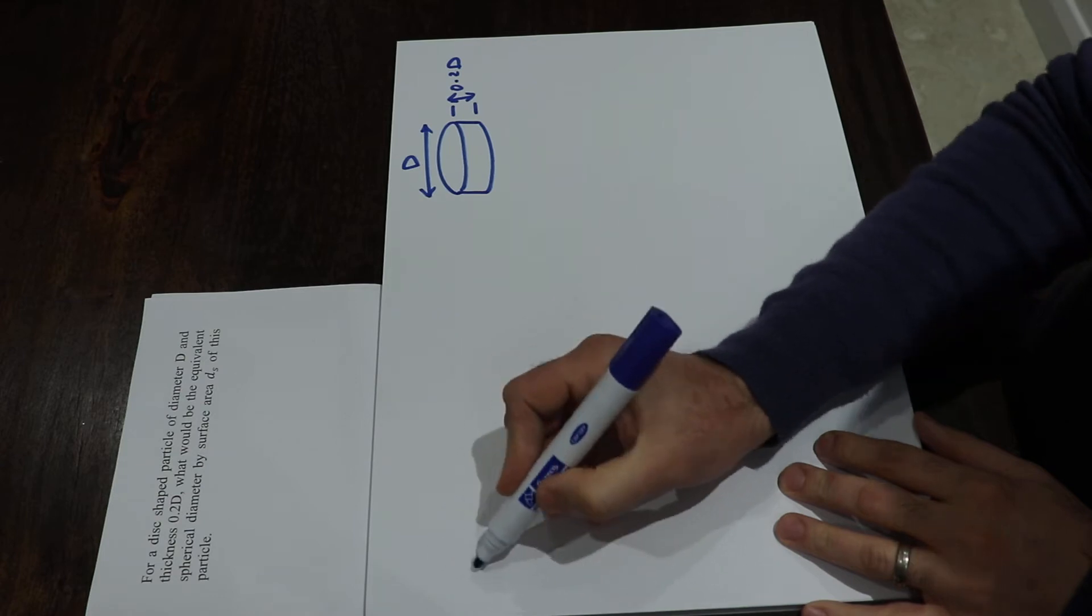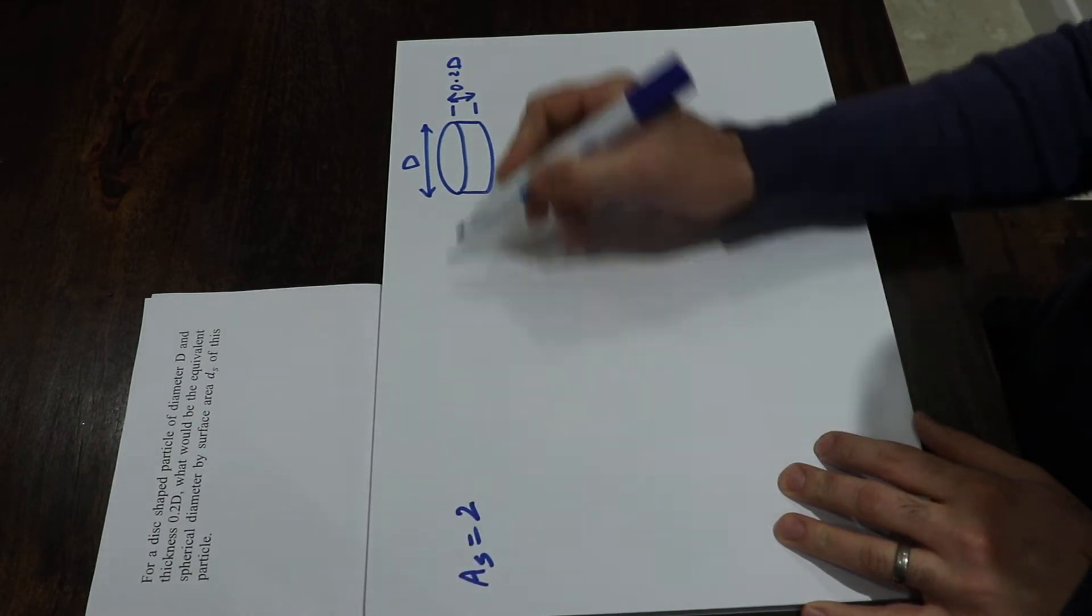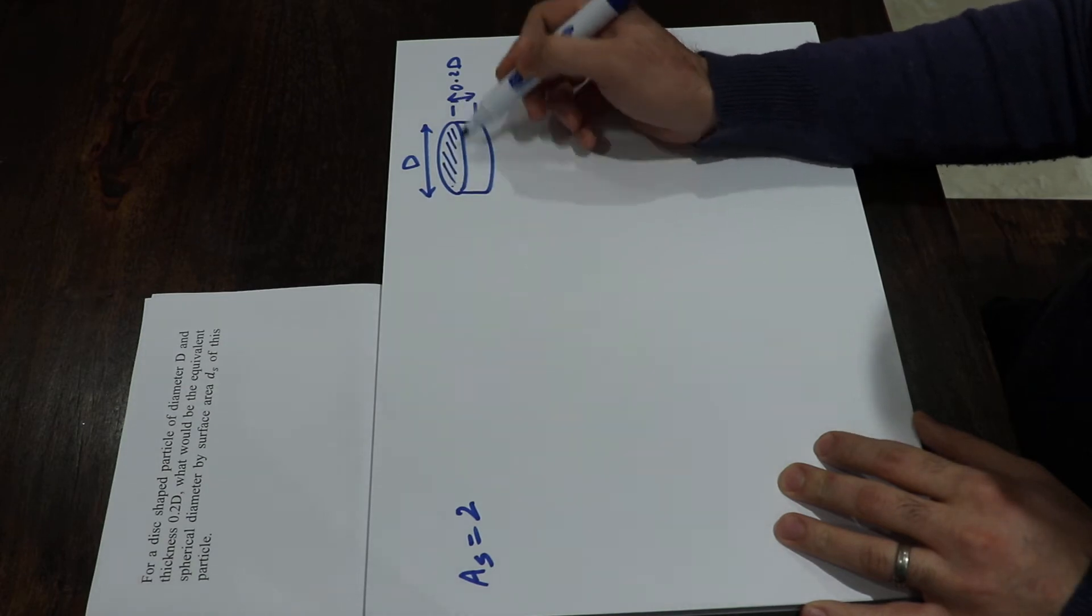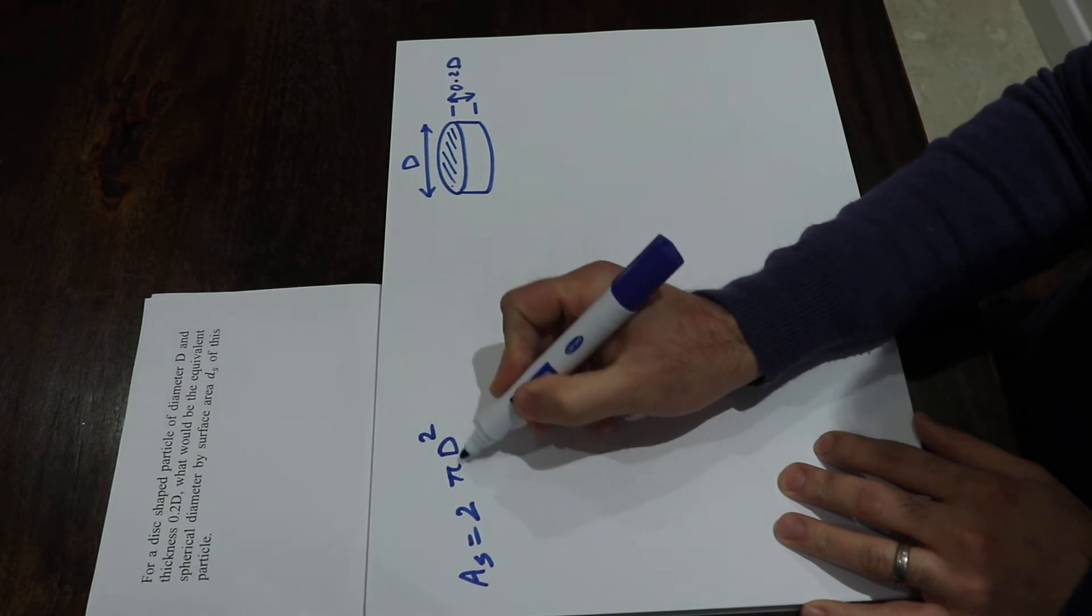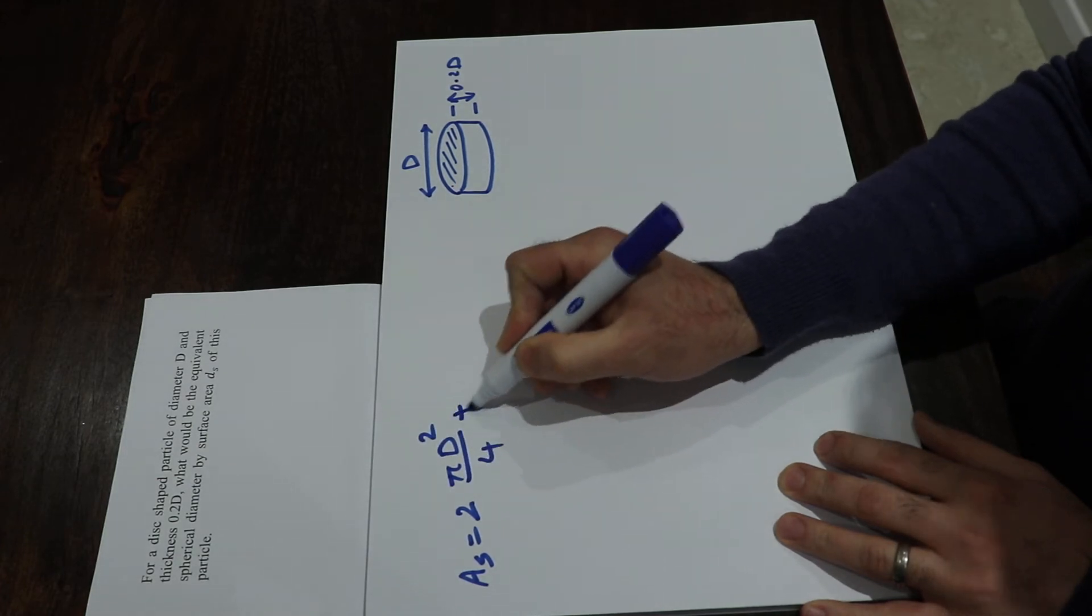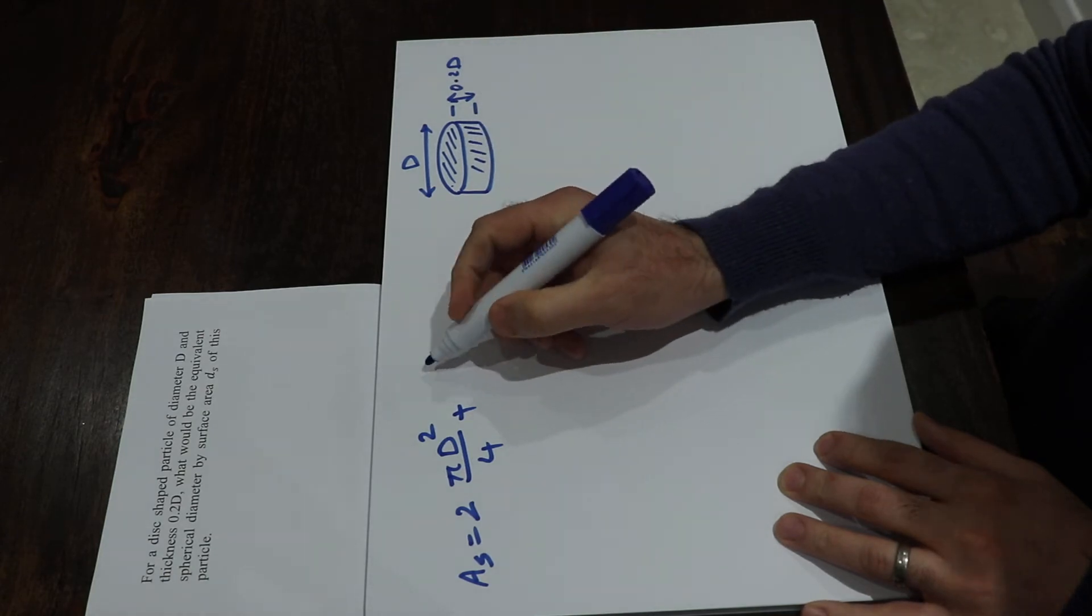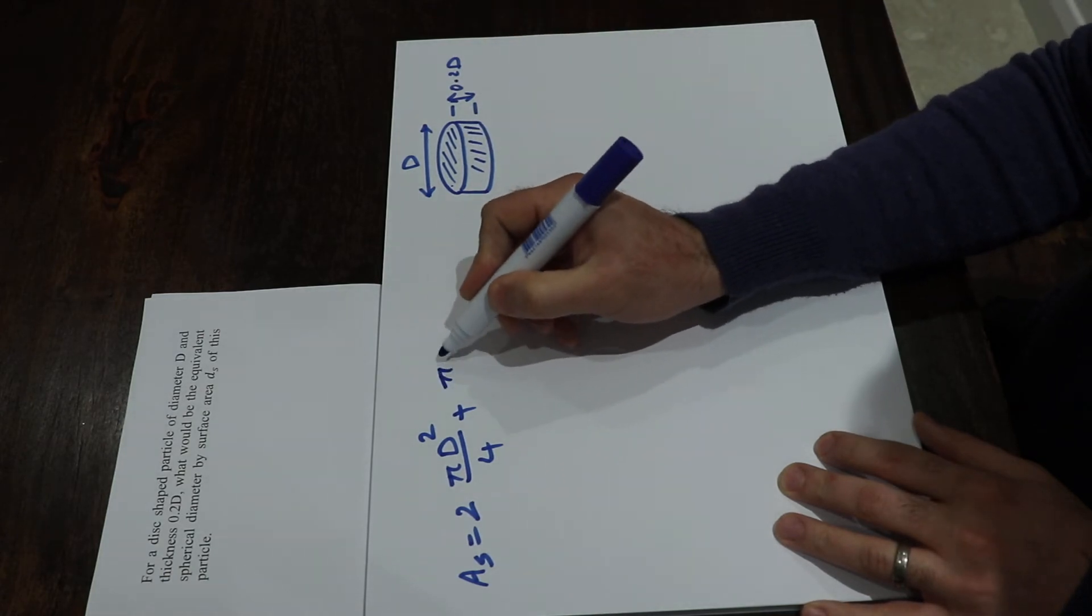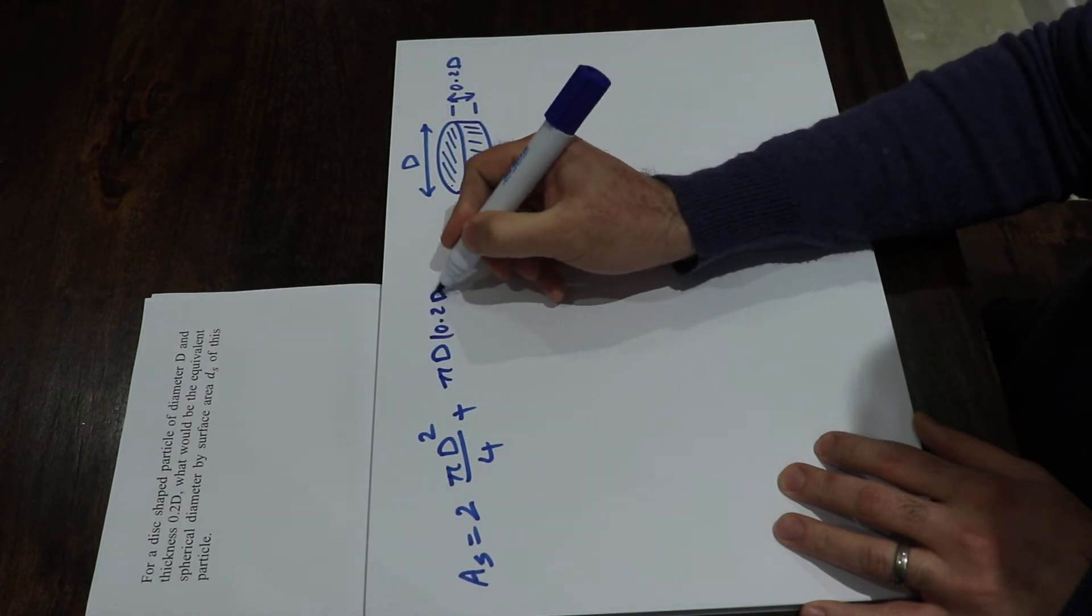So the surface area of this disk-shaped particle AS will be equal to two times, you have two basically faces at top and the bottom, therefore two times pi d squared divided by four, plus the lateral area which will be equal to pi d times the height which is 0.2d.